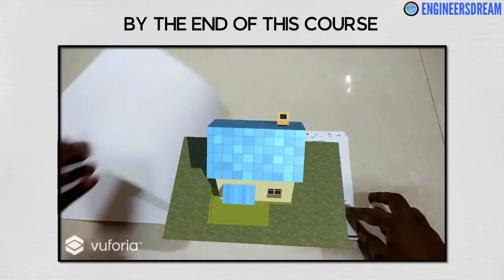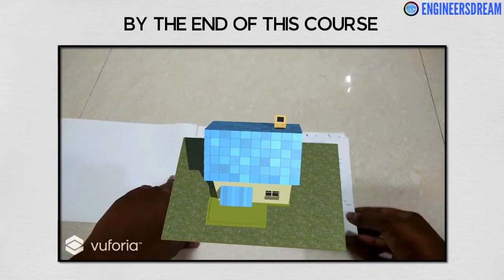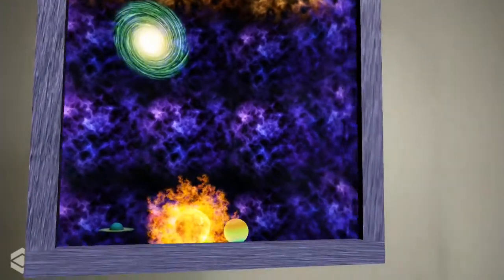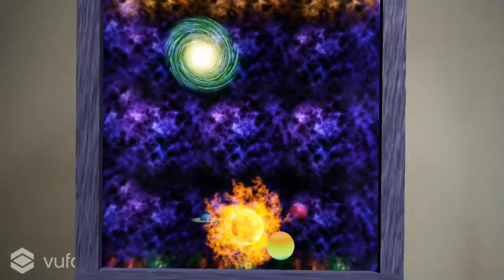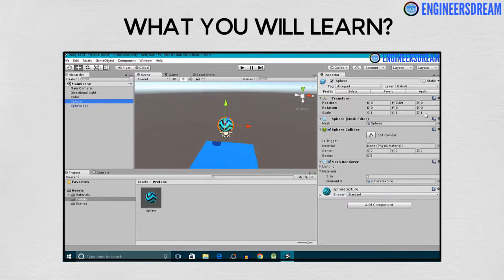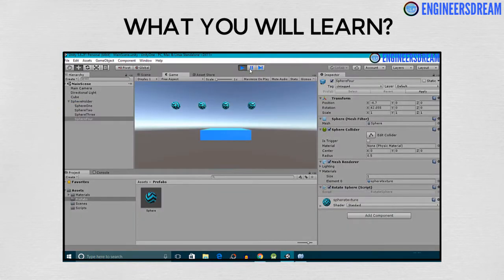By the end of this course, you will create a total of 15 augmented reality applications which you can run inside an Android smartphone or an iPhone. In this course, you will first create a simple Unity project for understanding the basic concepts related to Unity and C# programming.